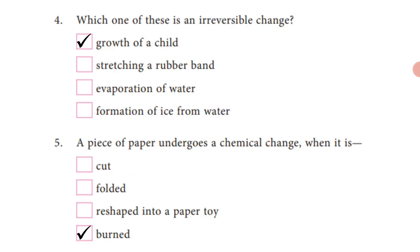Fourth, which one of these is an irreversible change? Answer: A, growth of a child. Fifth, a piece of paper undergoes a chemical change when it is burned.